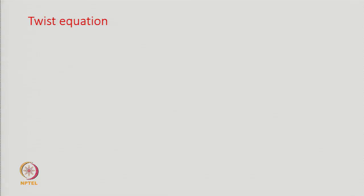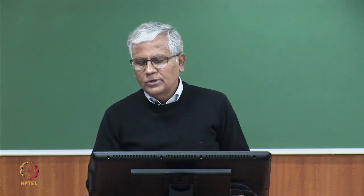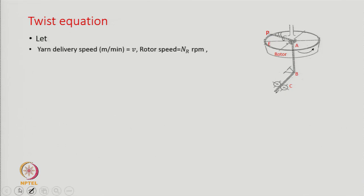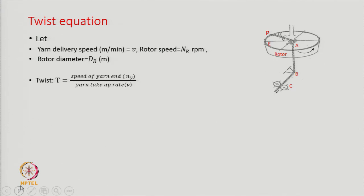We will discuss twist equations. The diagram shows a rotor and the yarn path. Let yarn delivery speed be V in meters per minute, rotor speed be N_R, and rotor diameter be D_R. The twist T is the speed of the yarn end N_Y divided by the yarn take-up rate V. This is known to us.